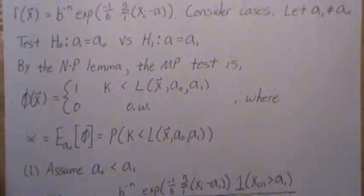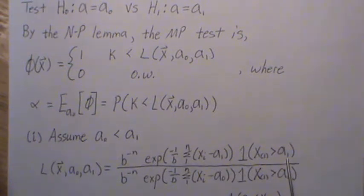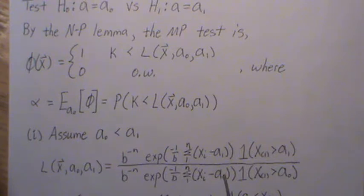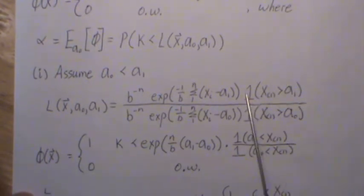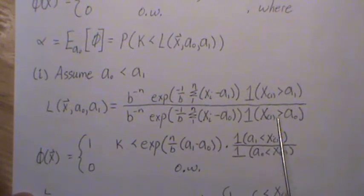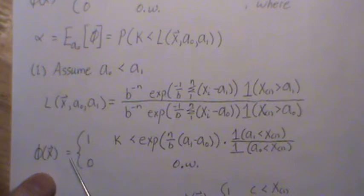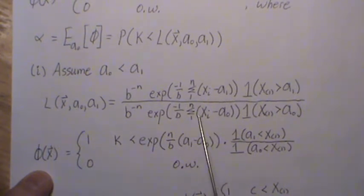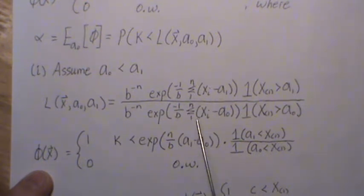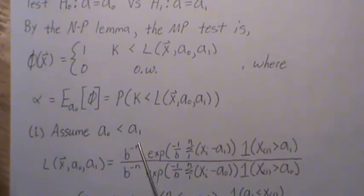When A1 is greater than A-naught, the likelihood ratio becomes: we take the joint density function, put A1 in the numerator and A-naught in the denominator. The indicator functions are 1 if the condition is met, 0 otherwise. This likelihood reduces — the b's cancel, some xi terms cancel — and we're left with an exponential term times the indicator functions. So this is the most powerful test for simple versus simple when A1 is greater than A-naught.